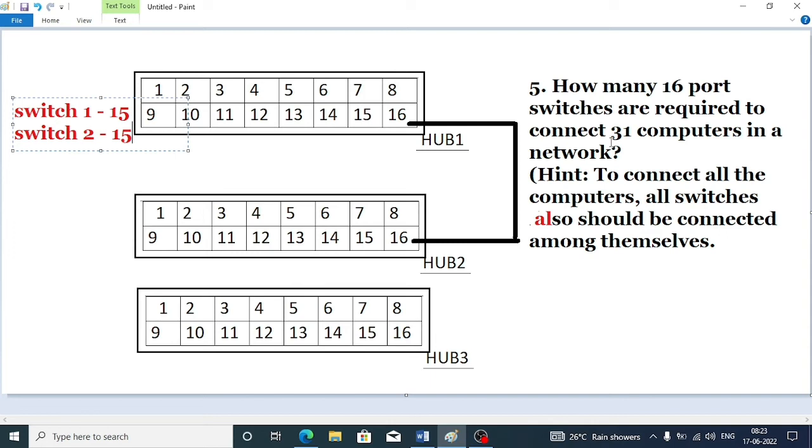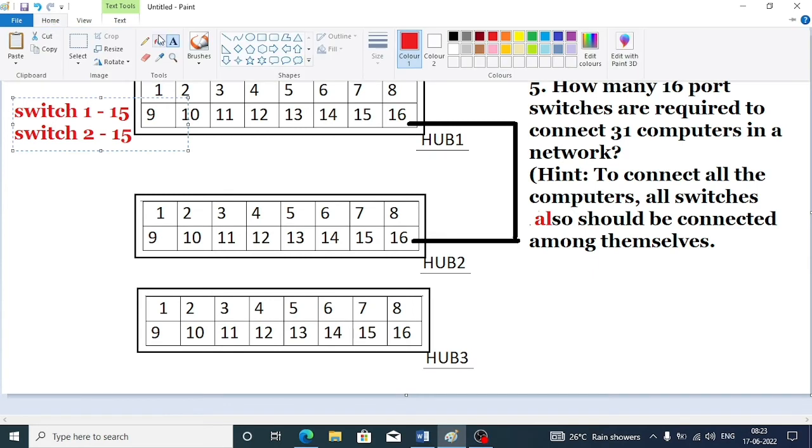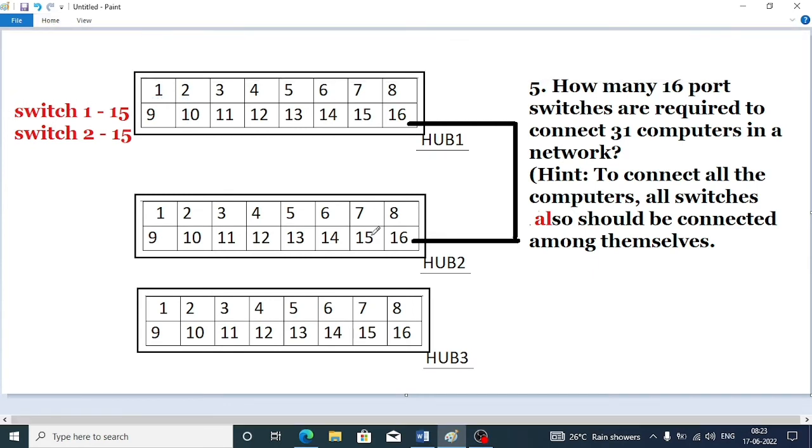We need to connect one more computer to the network, so we will require another switch. Now we want to connect switch 3 also with switch 1 and 2. What we will do is take port 15 of switch 2 and join it.